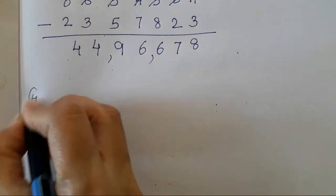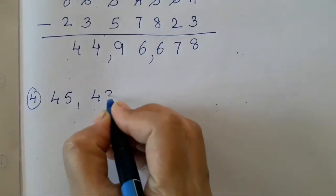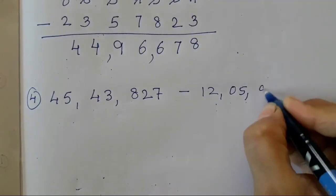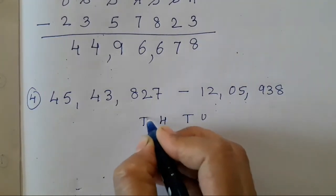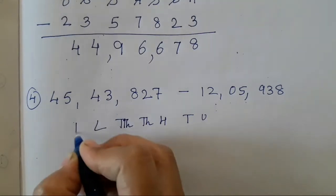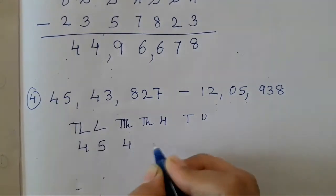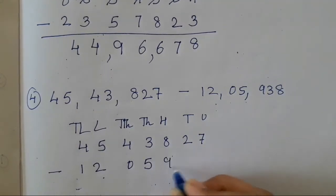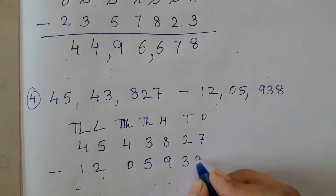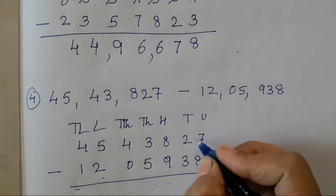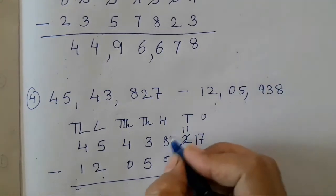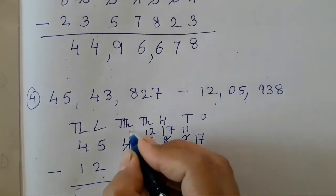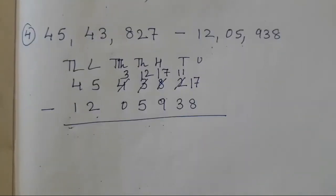Now let's do the fourth sum: 45,43,827 minus 12,09,938. Units, 10s, 100, 1000, 10,000, lakh, 10 lakh. So 45 lakh, 43,827 minus 12 lakh, 09,938. Now 7 cannot be subtracted, so 17. 1 we have borrowed from 7, so 17 — this will become 2. 1 we have borrowed from here, so this will become 3. Rest all can be subtracted.